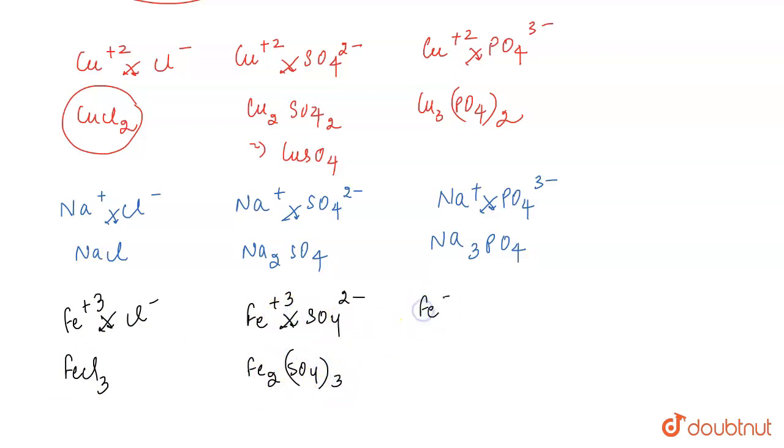If you interchange the valencies, then you have Fe plus 3 again, and then you have PO4 3 negative. So when you interchange the valencies, you will get FePO4.